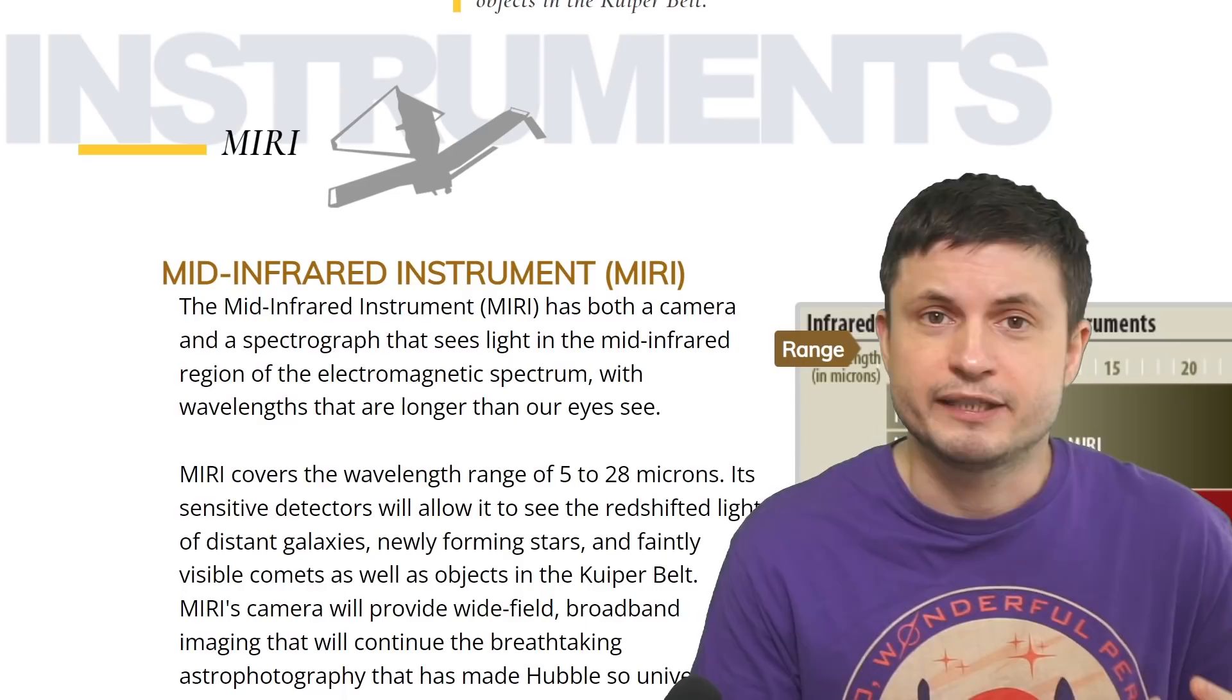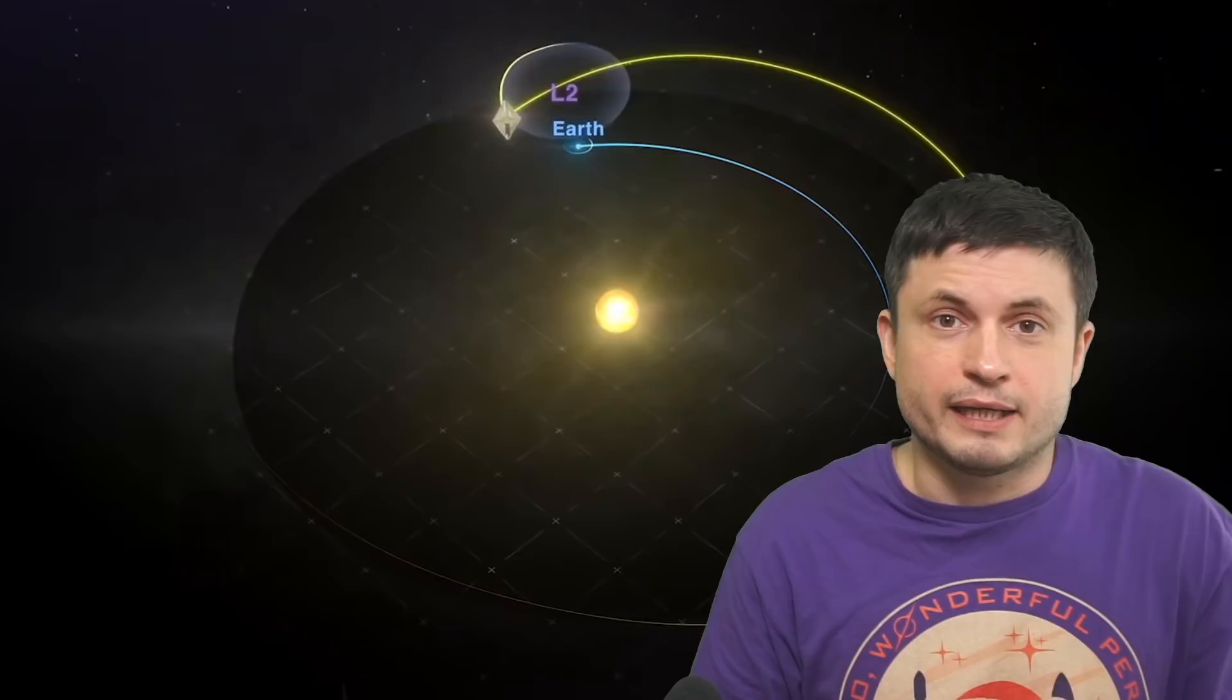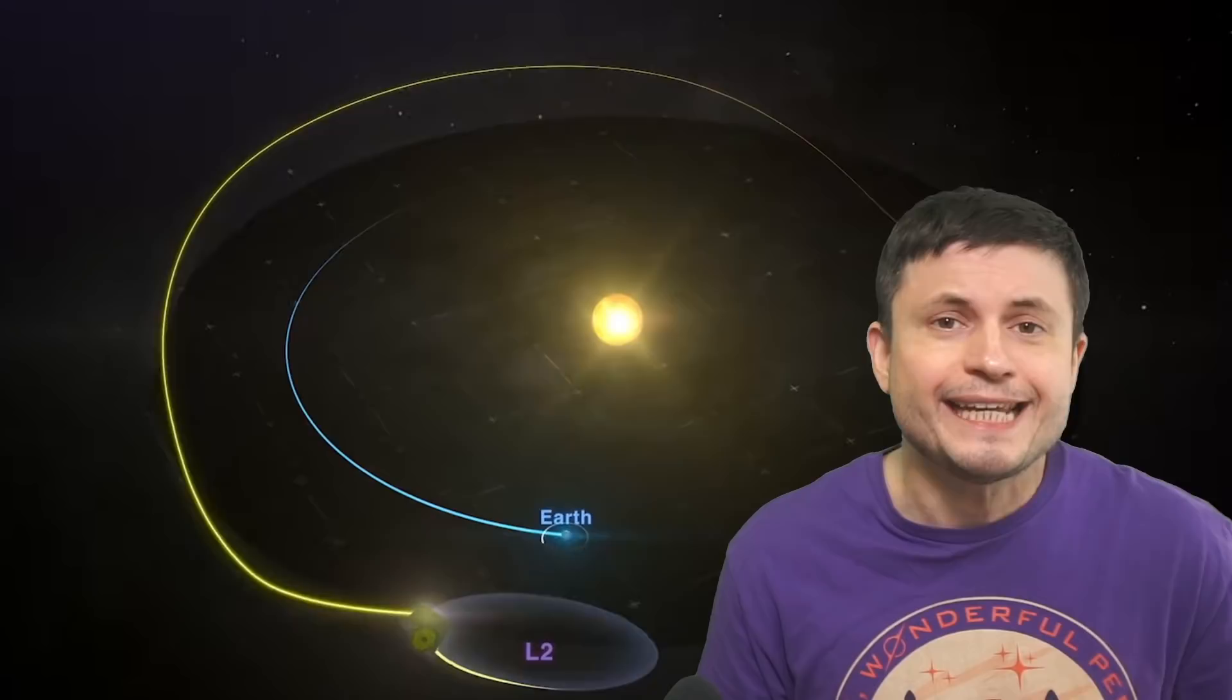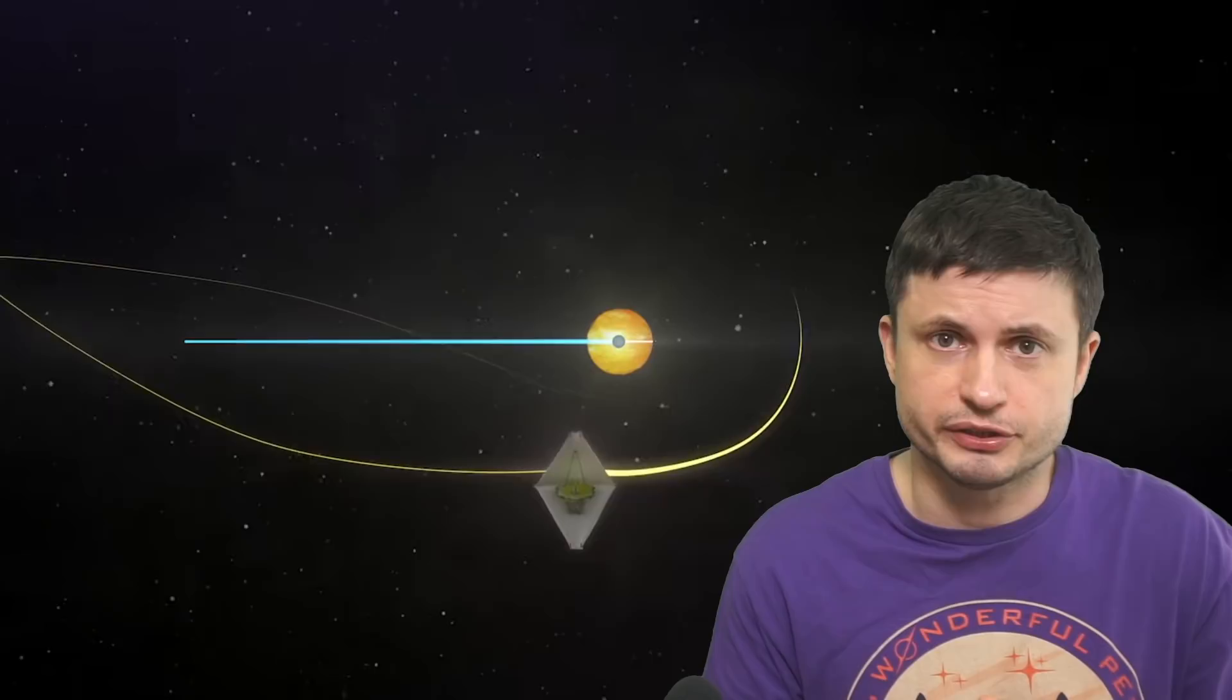So just as an example, MIRI or the mid-infrared instrument is going to take approximately 120 days to cool down to its necessary temperature. And all of the instrument testing and all of the necessary adjustments will most likely take nearly 180 days in total. So essentially by the summertime, that's when we're finally going to start seeing first images. But until then, it's very likely that this is going to be an extremely slow process, mostly because of the complexity of all of the parts and everything that needs to work together in order to achieve the final goal.